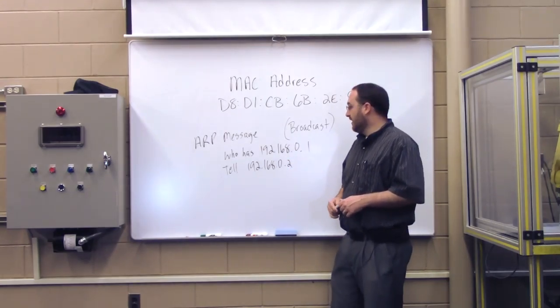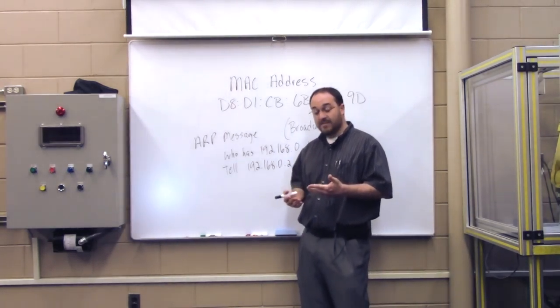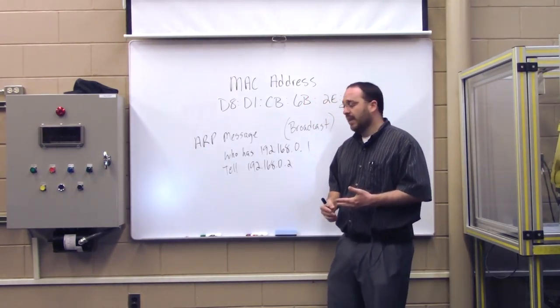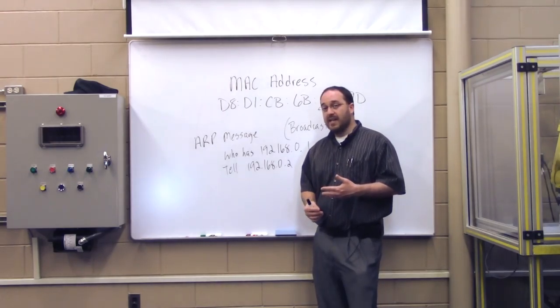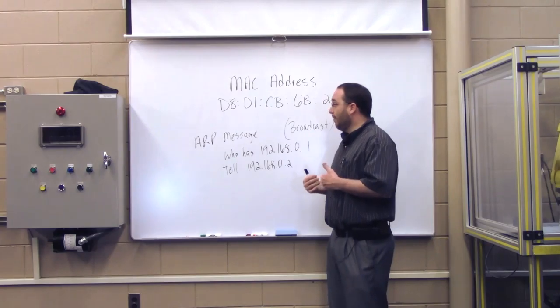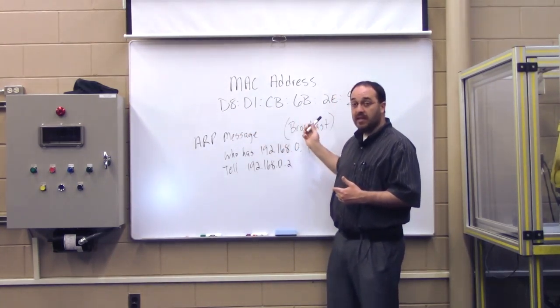But the one computer that does have 192.168.0.1 will say, oh, hey, that's me. And it will construct what's called an ARP reply. And in the ARP reply, it says, I am 192.168.0.1, and my MAC address is D8, D1, CB, etc.